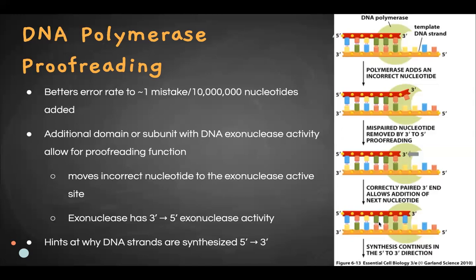This also hints at why DNA strands are synthesized in the five-prime to three-prime direction. It has to do with phosphodiester bonds — when you add a nucleotide, the third phosphate gets cleaved off and the energy goes to the three-prime end. If you made a mistake on the five-prime end, there would be no third phosphate for the energy to form that phosphodiester bond, so replication could not continue.